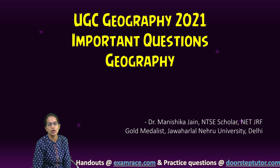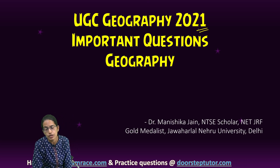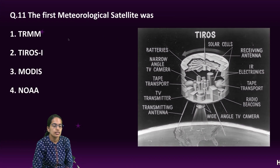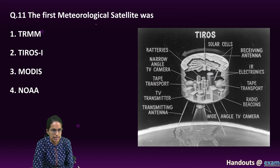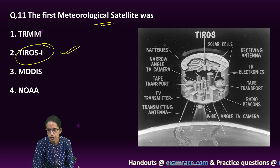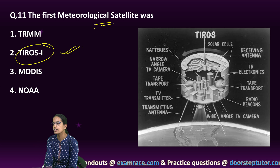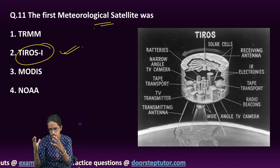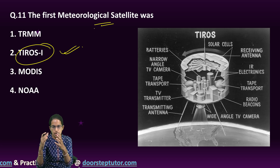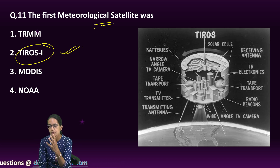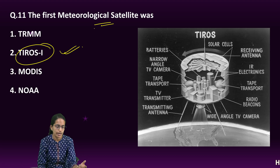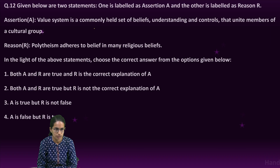Welcome. In this section, we will talk about the questions that came in the 2021 geography paper. The first is meteorological satellite data. The first meteorological satellite was TIROS-1. During the 1950s, weather scientists gave thought to identifying meteorological phenomena with the help of satellites and powerful rockets. TIROS-1 was one of the initiatives for the same.